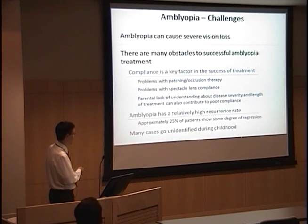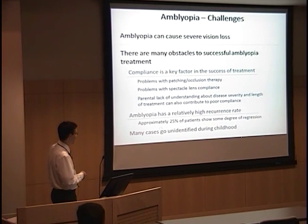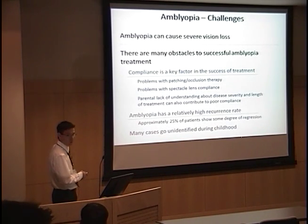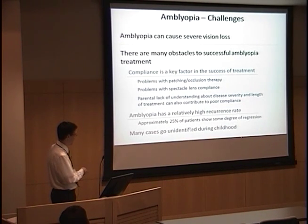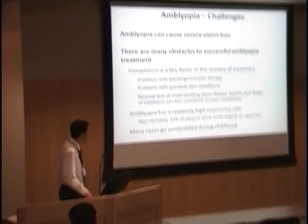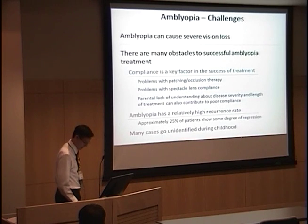Amblyopia also has a fairly high recurrence rate, so it's important to continue to watch these kids and initiate therapy again if we see signs of recurrence. One in four is estimated to show some degree of regression. And unfortunately, many cases go unidentified until treatments are not as successful.